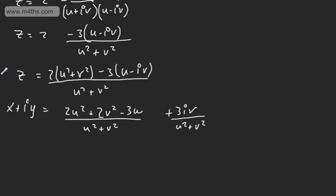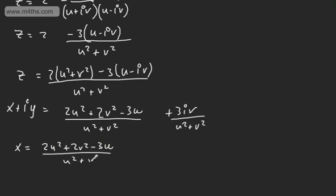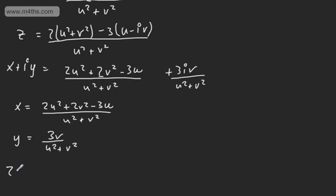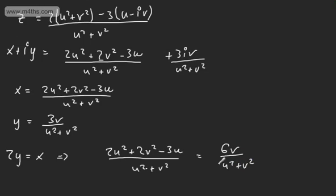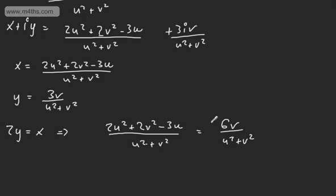In the original question, we're told that X is equal to 2Y. So we've got X equal to 2U squared plus 2V squared minus 3U over U squared plus V squared, and Y equal to 3V over U squared plus V squared. We're told X is equal to 2Y, so: 2U squared plus 2V squared minus 3U divided by U squared plus V squared equals 2 times 6V over U squared plus V squared. We can get rid of the denominators and express this in terms of U and V.